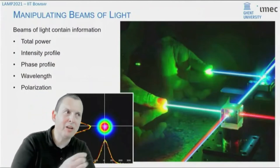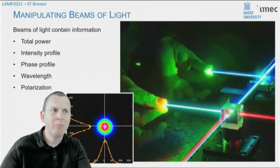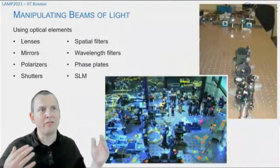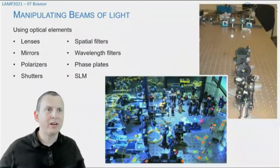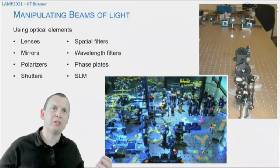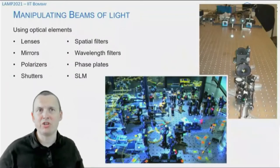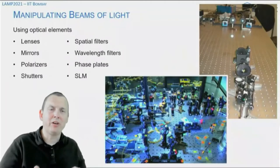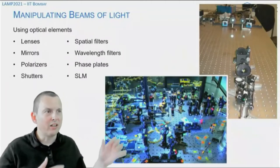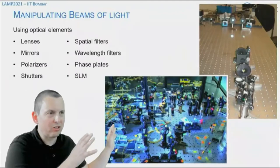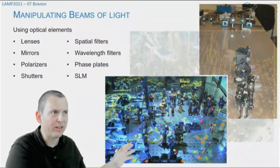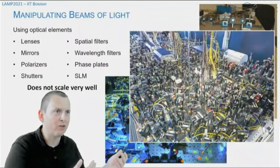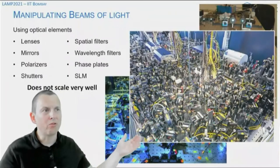If you want to manipulate that information, you typically go to the classical ways of lenses, mirrors, polarizers, spatial filters. And if you want to make that programmable, the typical component you use is a spatial light modulator. Essentially, it's a kind of display where you can modulate space and amplitude in the form of pixels. Still, if you're working on a programmable photonic system and you want to scale that up to really complex functionality, you really run into problems. This doesn't scale very well.